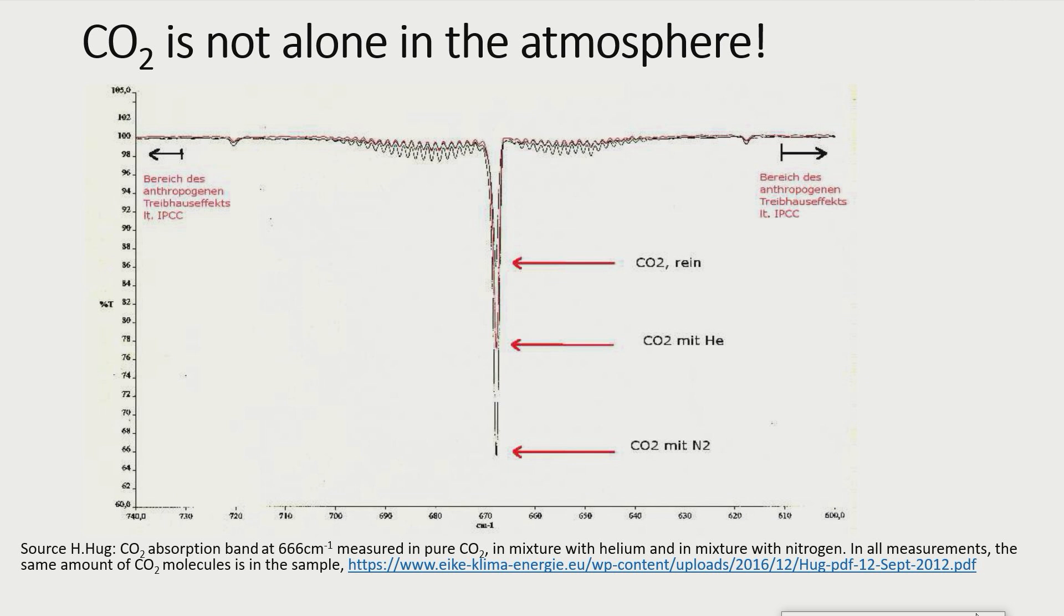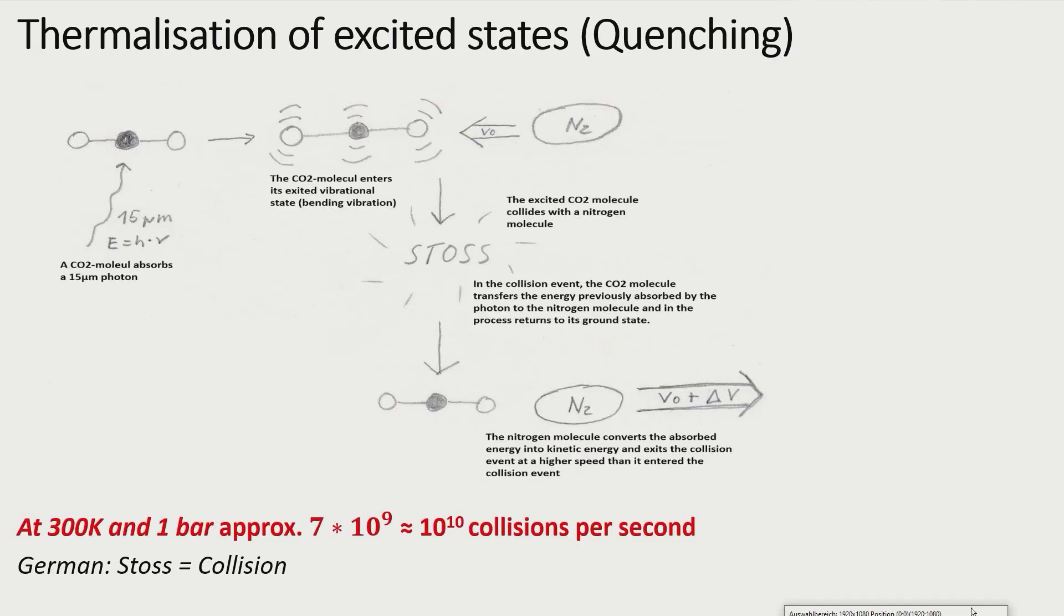That means the not IR active gases, nitrogen and helium, somehow help the excited states of the CO2 molecules to return back to their ground states more quickly, and thus increase the proportion of the ground states. This process is called thermalization or quenching of excited states.